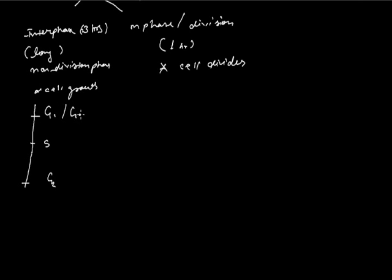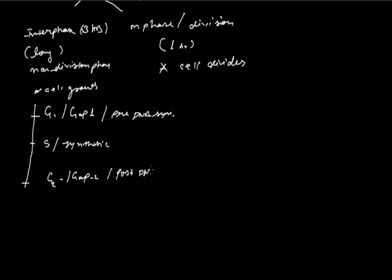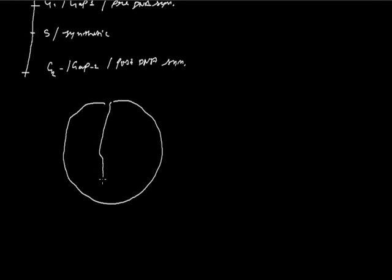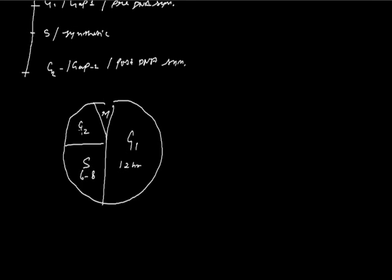G1 phase is also called GAP1 phase or pre-DNA synthesis phase. S phase is also called the synthetic phase, because synthesis of DNA occurs at this stage. G2 phase is also called GAP2 phase or post-DNA synthesis phase. If we see the cell cycle in a diagram, it is divided into four stages: G1, S, G2, and M phase. G1 phase is approximately 12 hours long, S phase is approximately 6 to 8 hours long, G2 phase is approximately 3 to 4 hours long, and M phase is approximately 1 hour long.